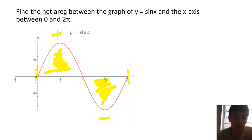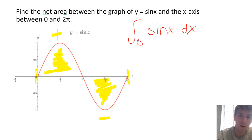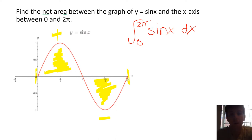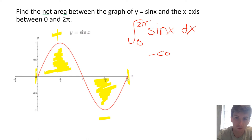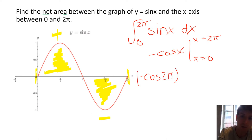To set up our definite integral, we take the integral of sine x dx with limits of integration from 0 to 2π. We just need to integrate: the antiderivative of sine is negative cosine. We evaluate negative cosine from x = 0 to x = 2π, so we have negative cosine of 2π minus negative cosine of 0.